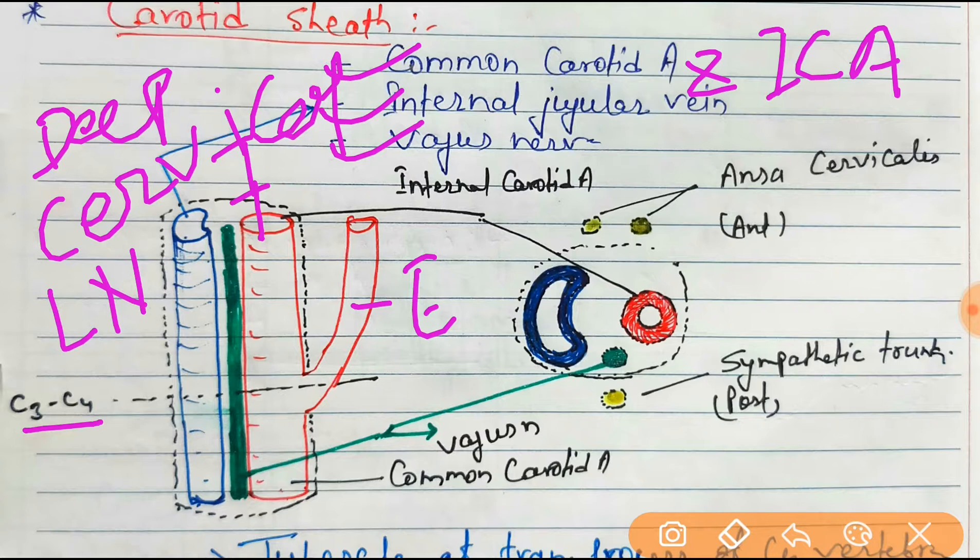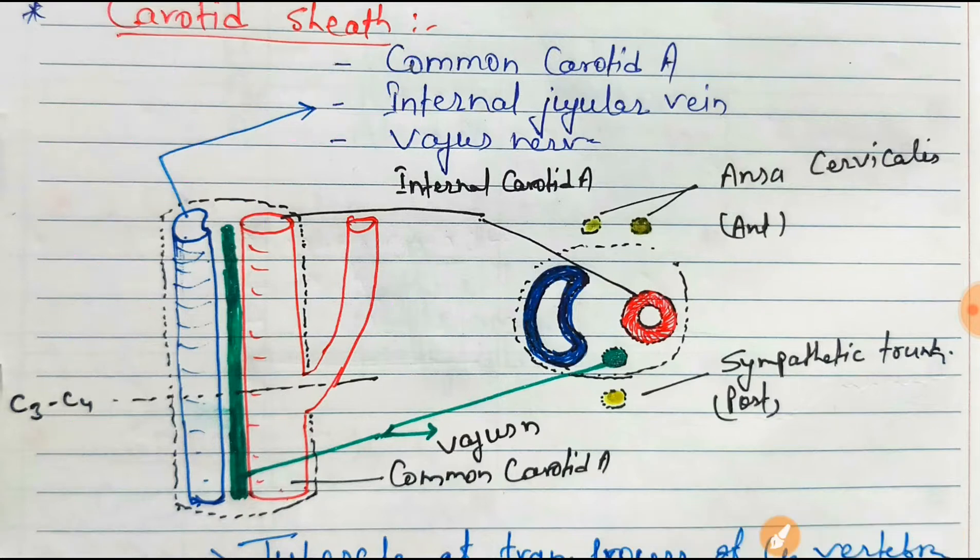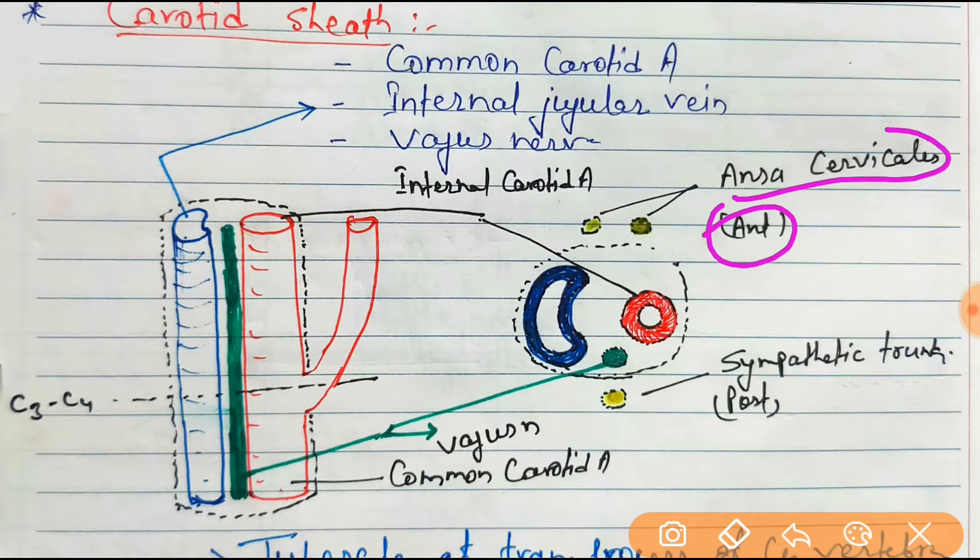Anatomy is just the structure which you see. According to the structure, anterior is ansa cervicalis, and posterior to that is sympathetic trunk.